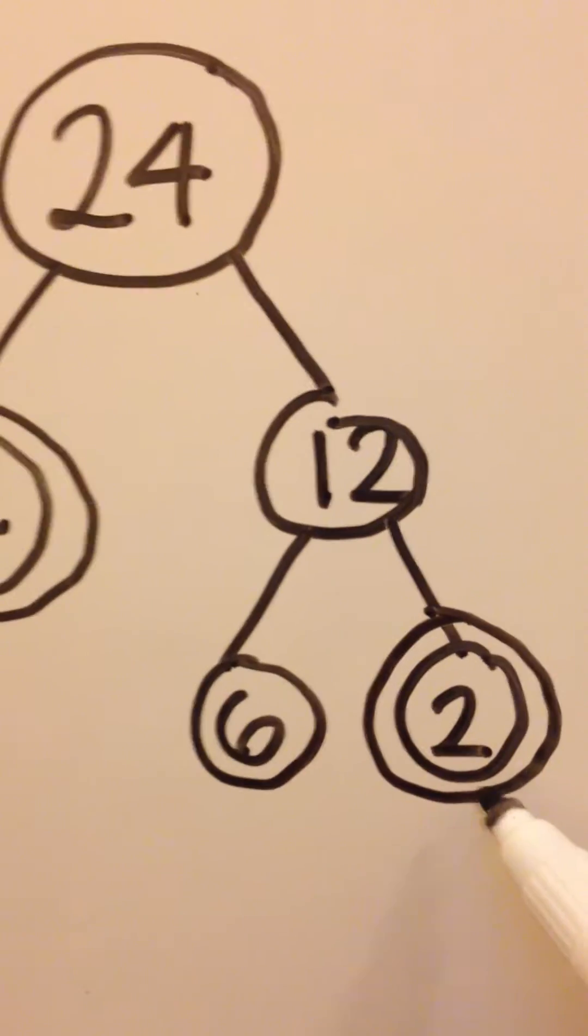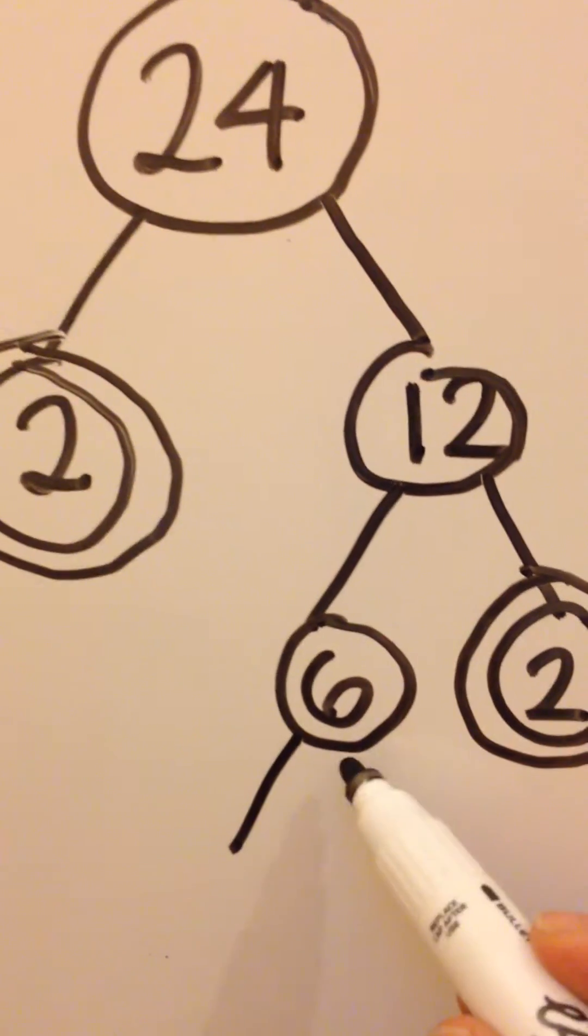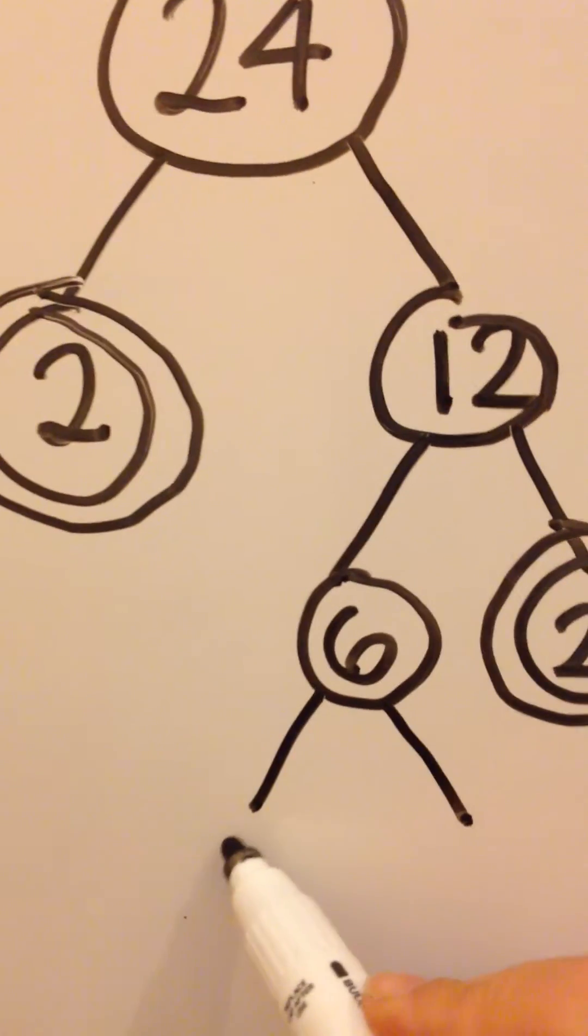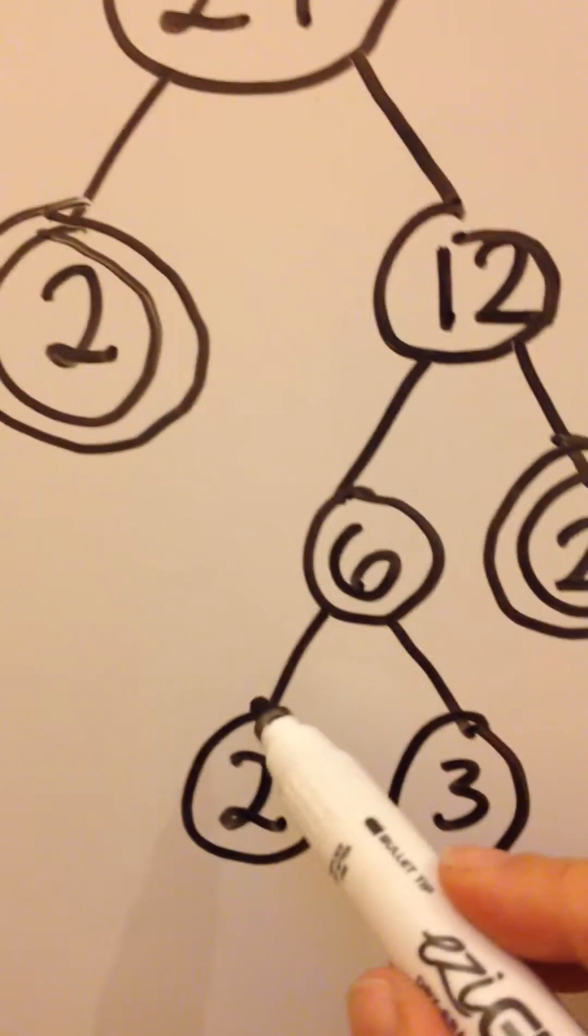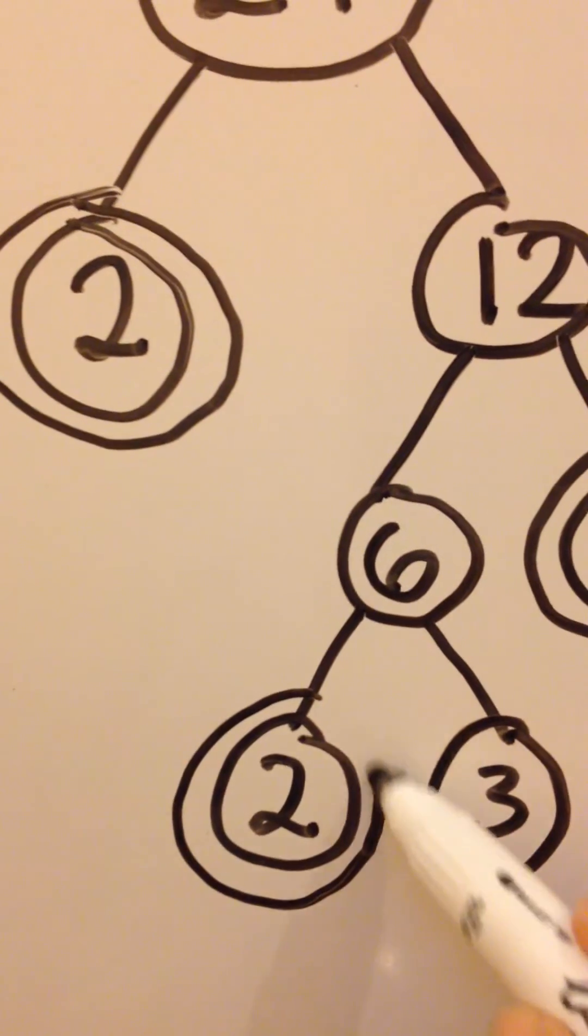Let's work on the 6 because this is now a dead end. How do we make 6 with a times table sum? We could have 2 times 3. Both of those are prime numbers, so let's put a double circle.